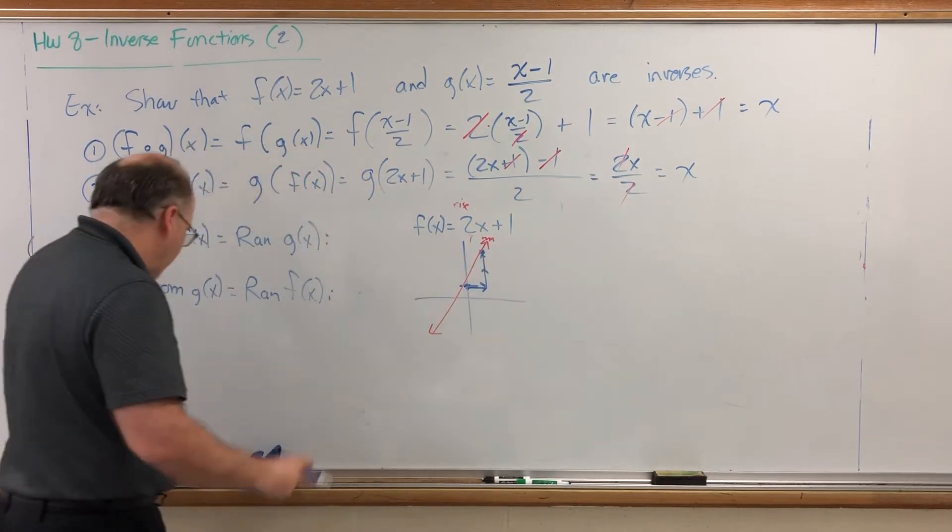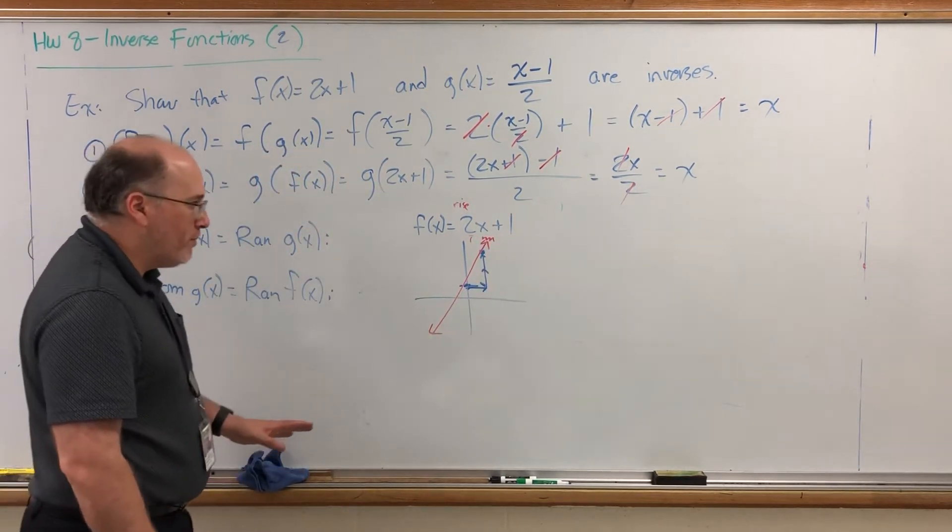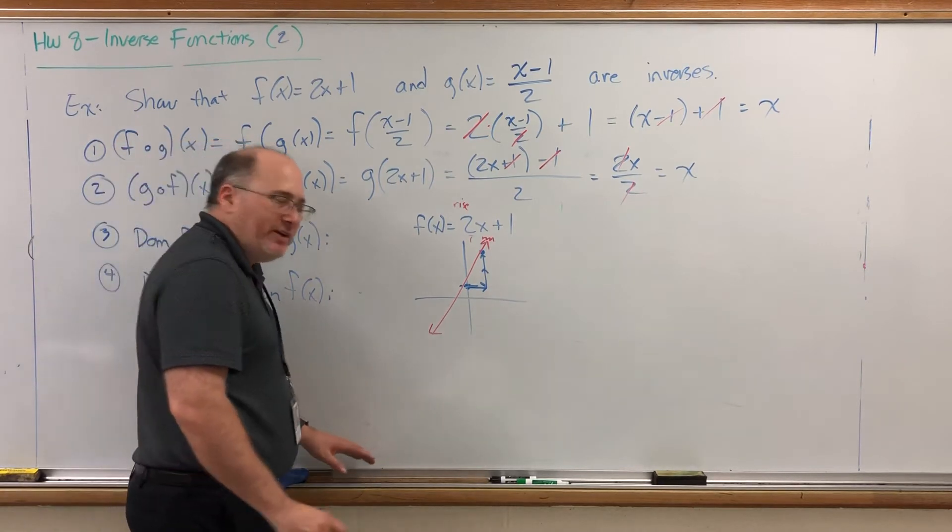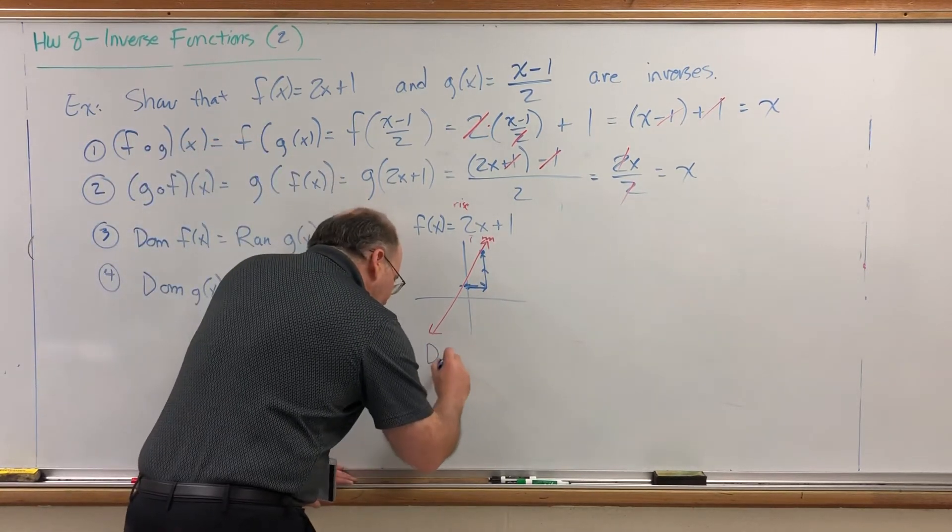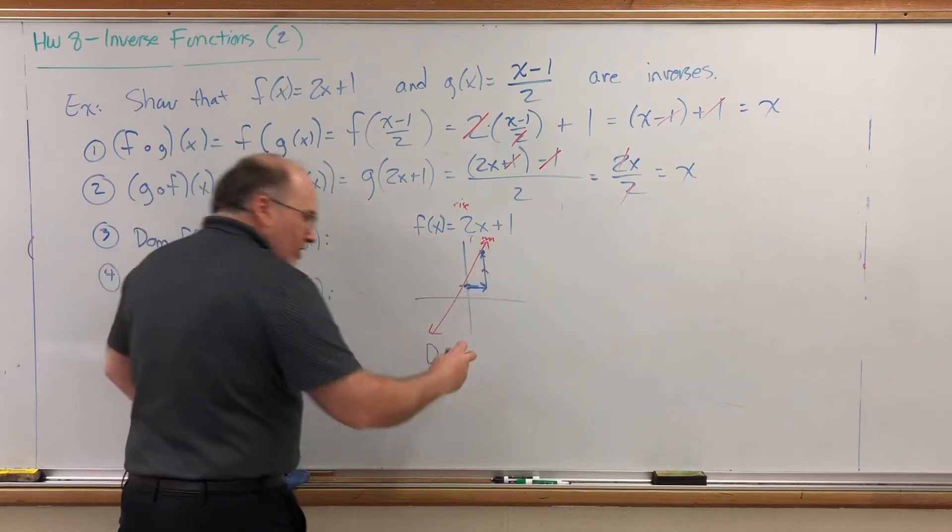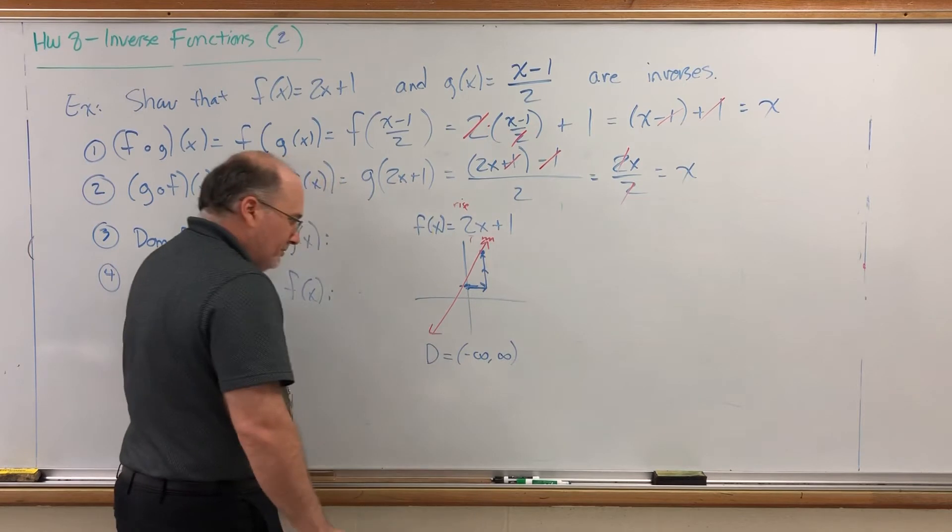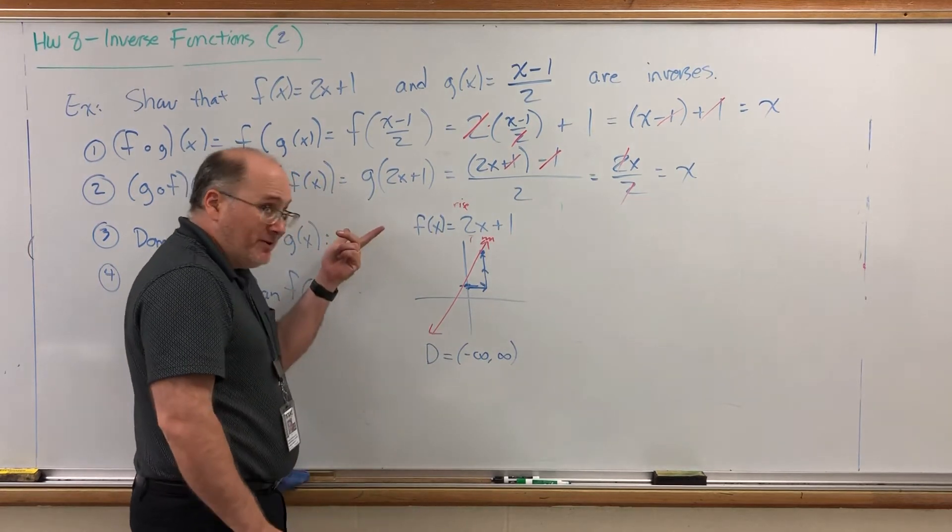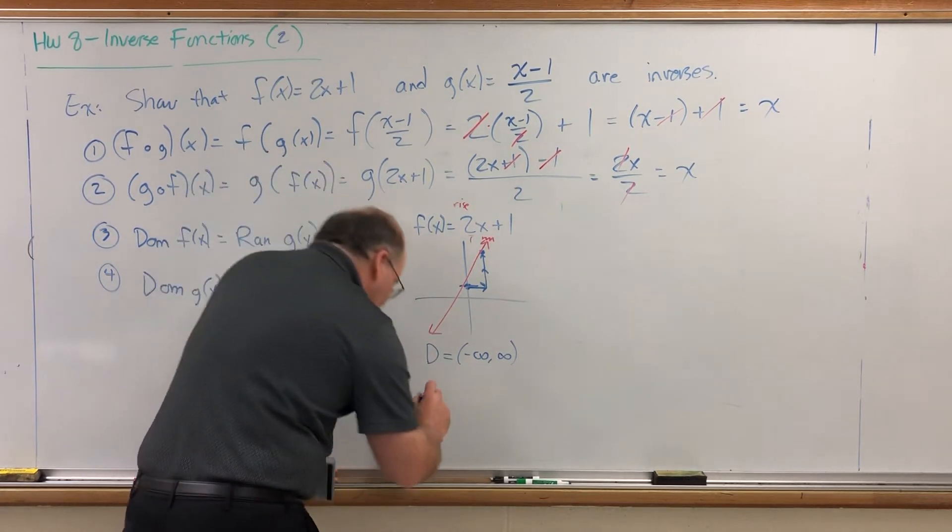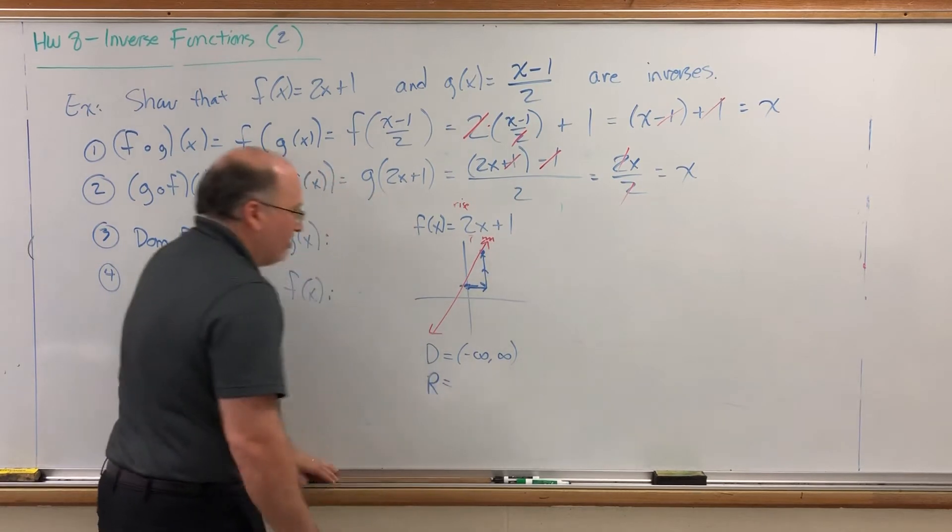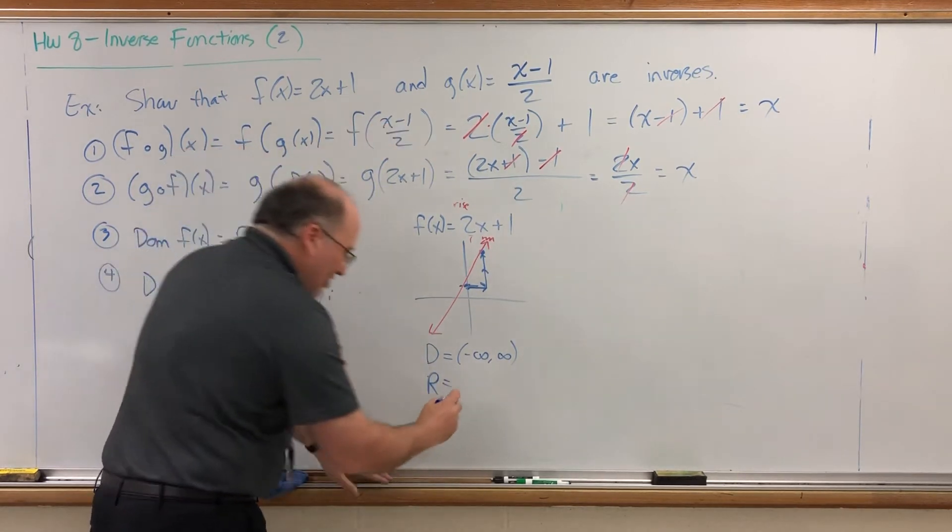Now, it's not perfectly accurate, but it's accurate enough for our purposes, which is to pull the domain and range. The domain here goes forever in both directions, negative infinity to infinity. Then again, it was a polynomial function that was destined to do that. The range is bottom to top, forever in both directions.